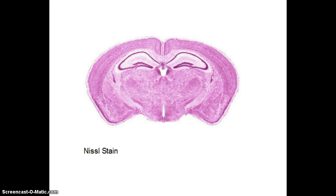Once we damage or stimulate the brain, we often want to look at the brain afterward and see how the structure of the cells have changed. To do that, we take the brain out of the animal and slice it using a microtome. In order to see the cells, we have to stain them — this is a Nissel stain, which is a very common stain that allows us to see both neurons and glia, including the axons and the dendrites.